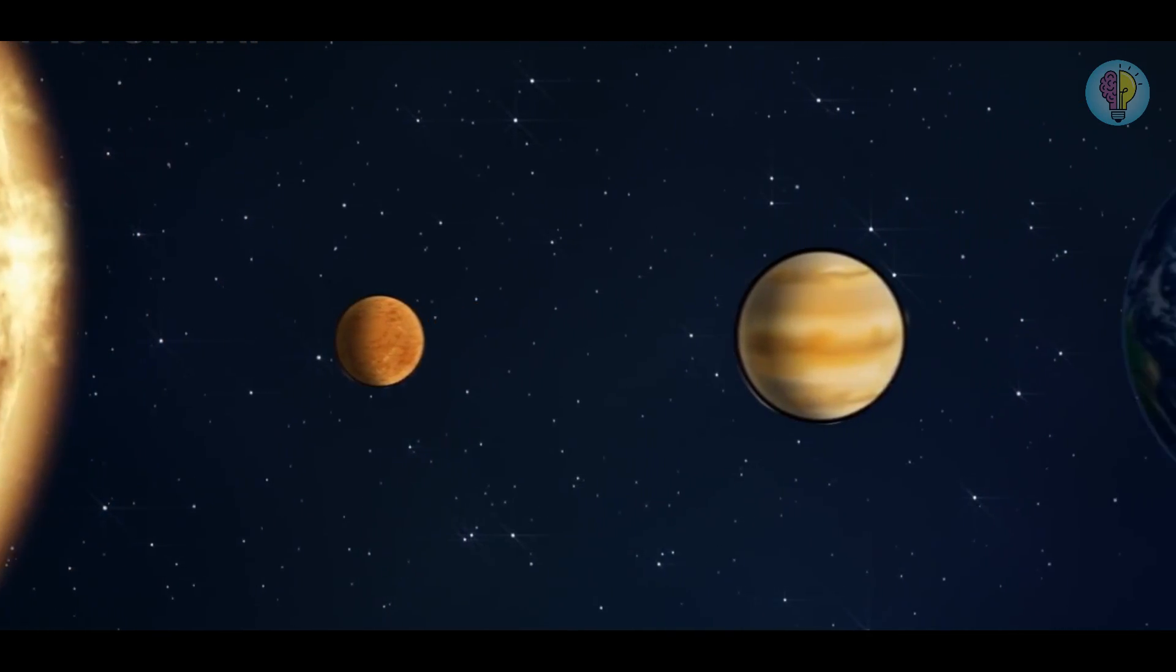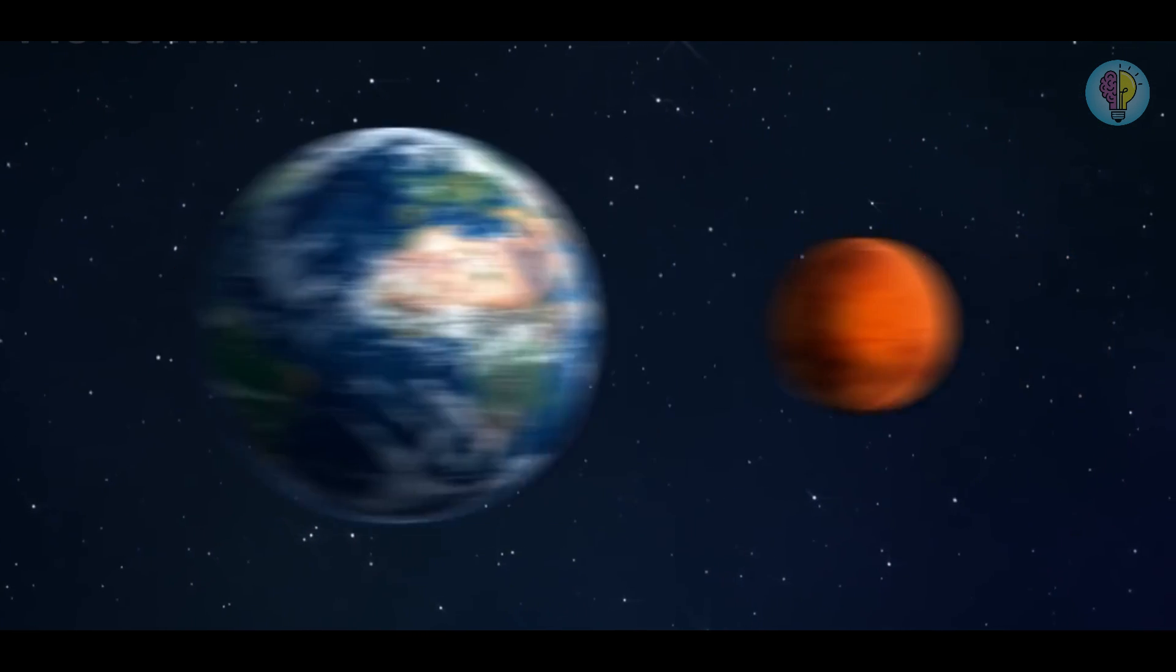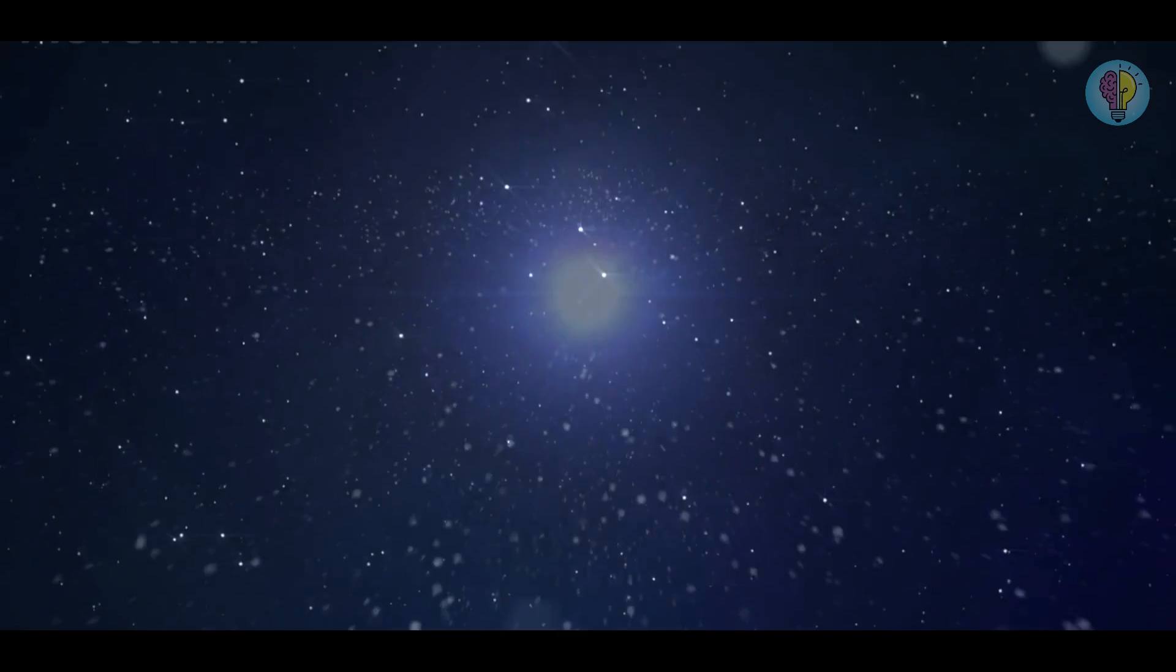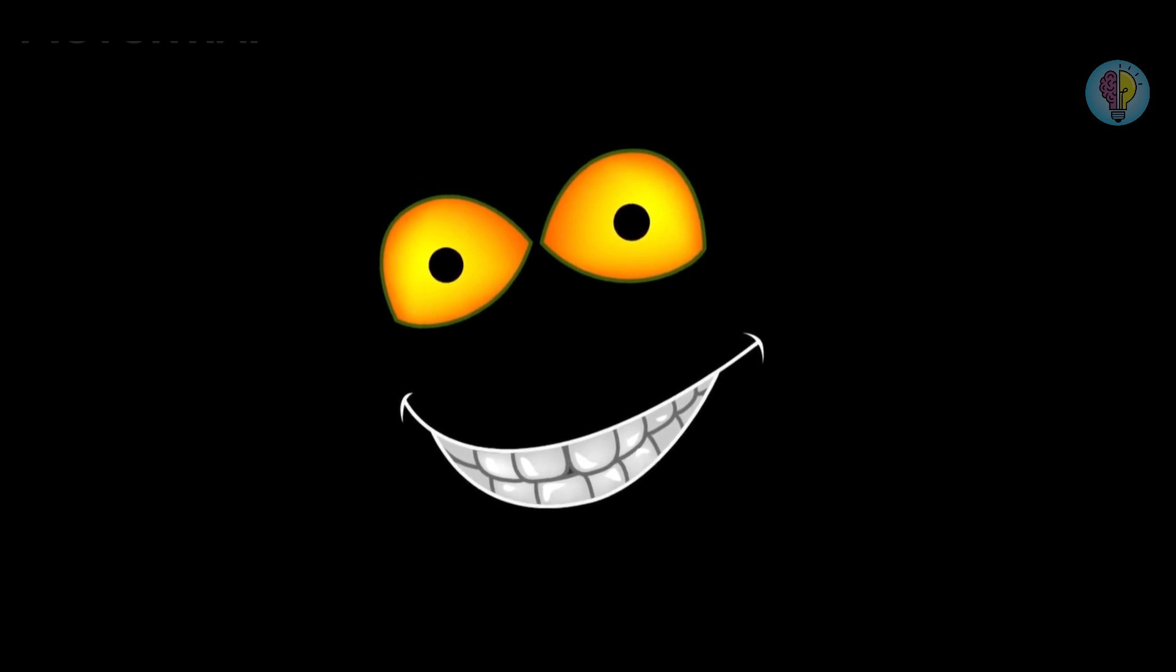As time goes on, inevitable processes will determine the fate of our sun, earth, neighboring planets, and the whole universe itself. And you know what they say? All good things must come to an end. So let's have a peek at a future so distant that it's hard to comprehend and try to answer one particularly alarming question: What will happen to us in the next 5 billion years? Just a warning, an apocalypse will come.